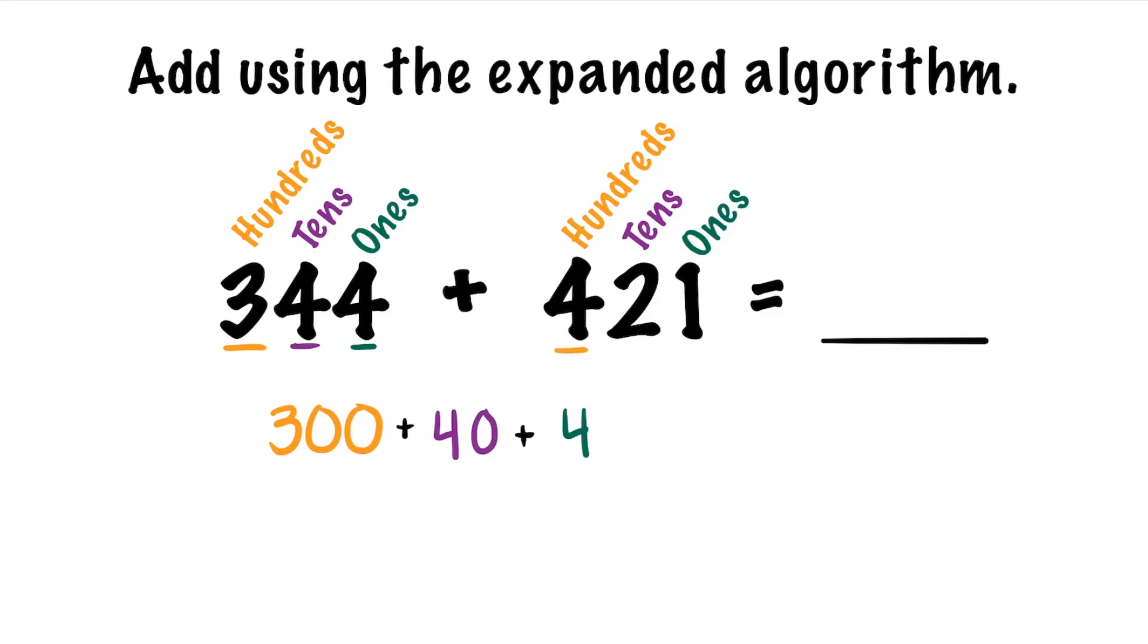The 4 in the hundreds place makes 400 because it's in the hundreds place, and the 2 that's in the tens place is going to make 2 tens which is 20, and the 1 in the ones place is simply just a 1. And we know 400 plus 20 plus 1 equals 421.